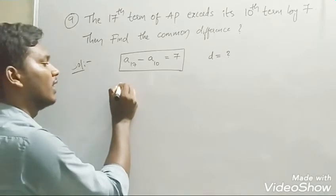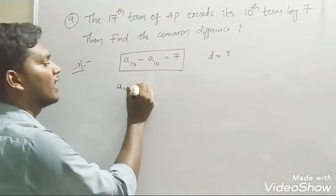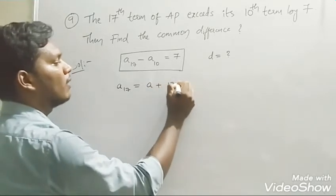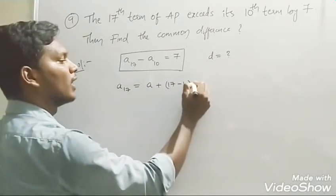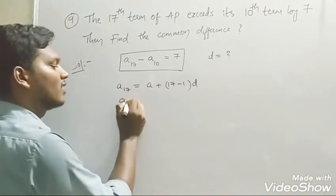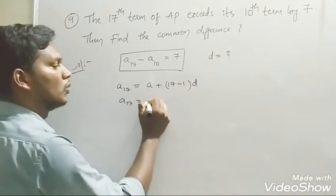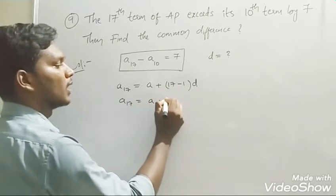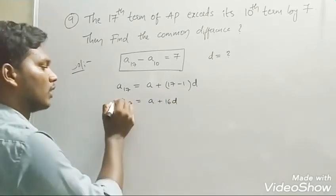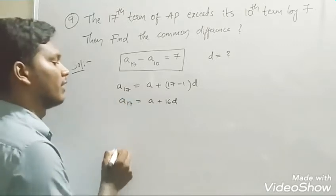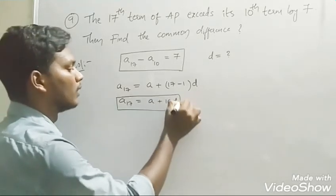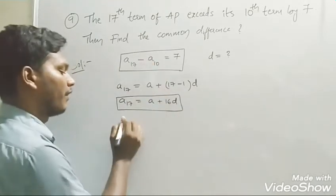What is the formula for a₁₇? So a₁₇ equals a plus (17 minus 1) times d, which gives us a₁₇ equals a plus 16d.